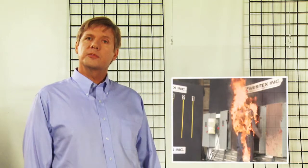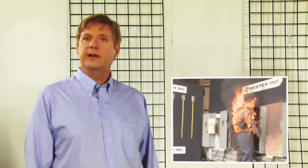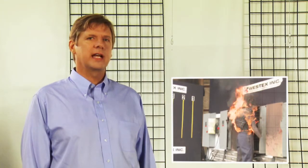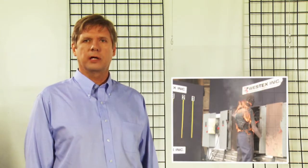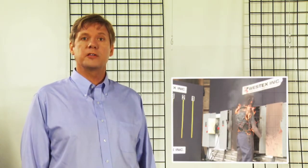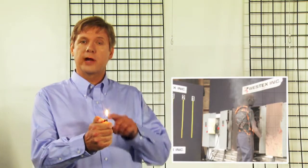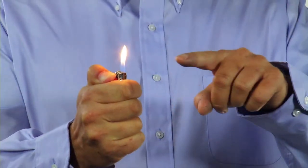As you can see, a worker exposed to an arc flash accident is likely to have conventional workwear catch on fire and has the potential of sustaining a very significant burn injury. The onset of second degree burns will occur at approximately 1.2 calories per square centimeter. This is equivalent to holding your finger over the tip of a flame of a cigarette lighter for one to two seconds.